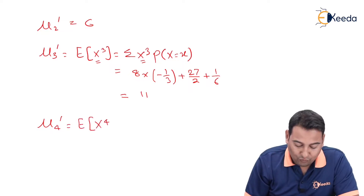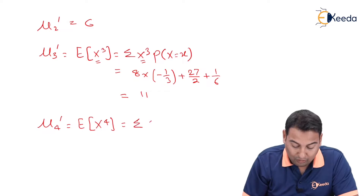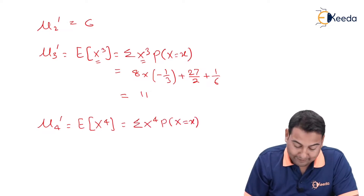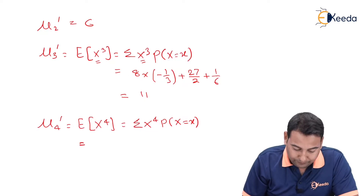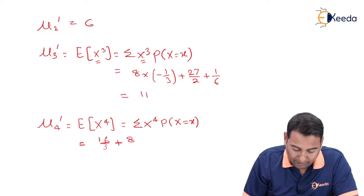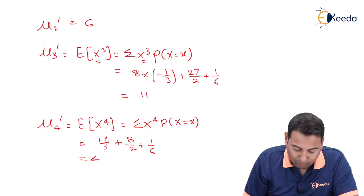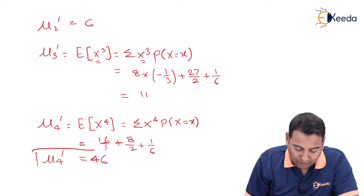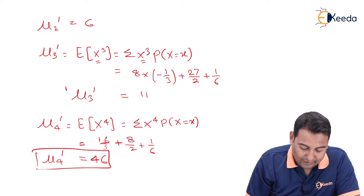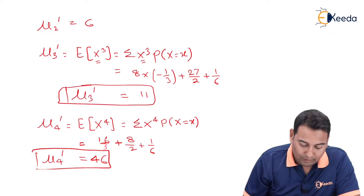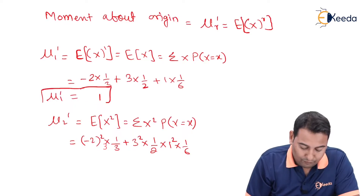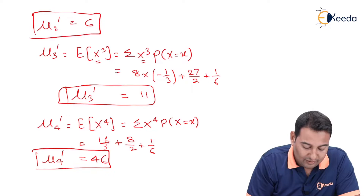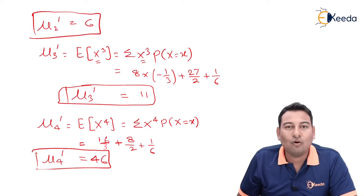The last raw moment is mu four dash, which is E(x raised to four), equal to summation of x raised to four into p of x. That will be sixteen-thirds plus eighty-one over two plus one-sixth. If you simplify, you get the fourth moment as forty-six. So to summarize: mu one dash is one, mu two dash is six, mu three dash is eleven, and mu four dash is forty-six. We've found all four moments about the origin.